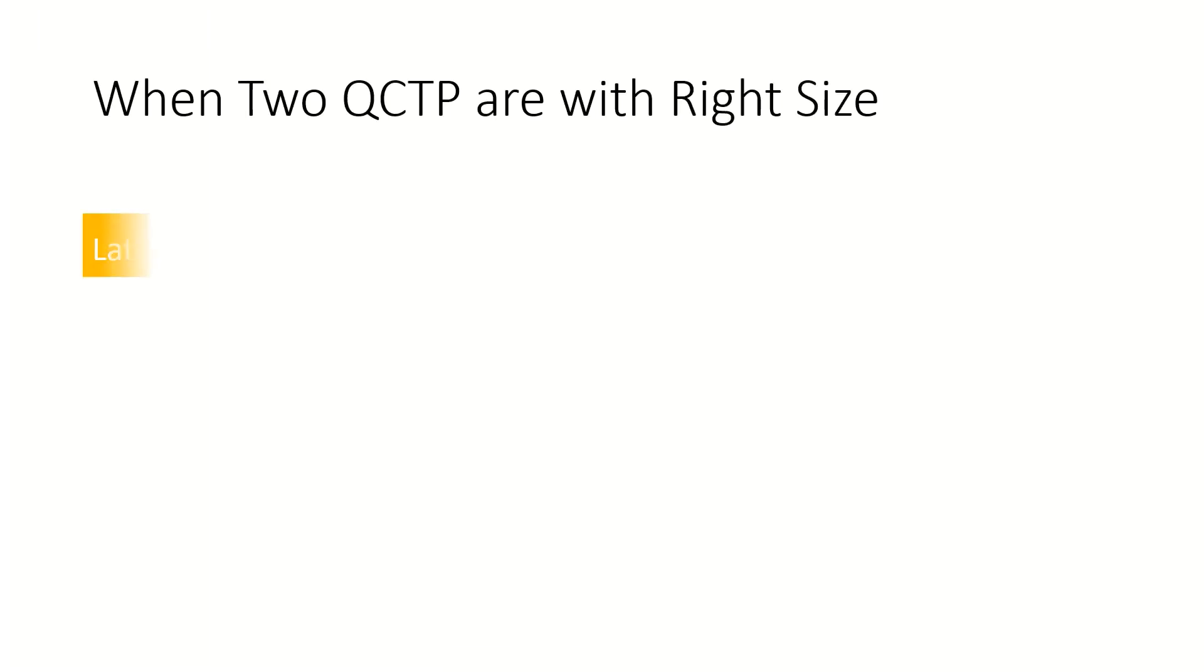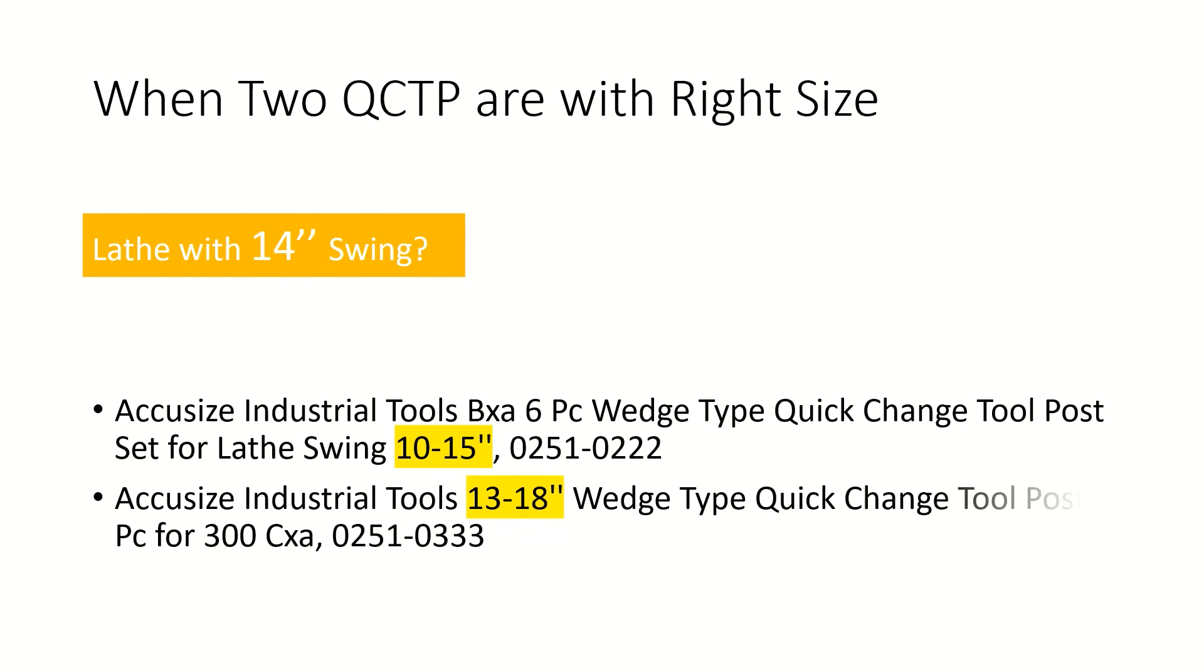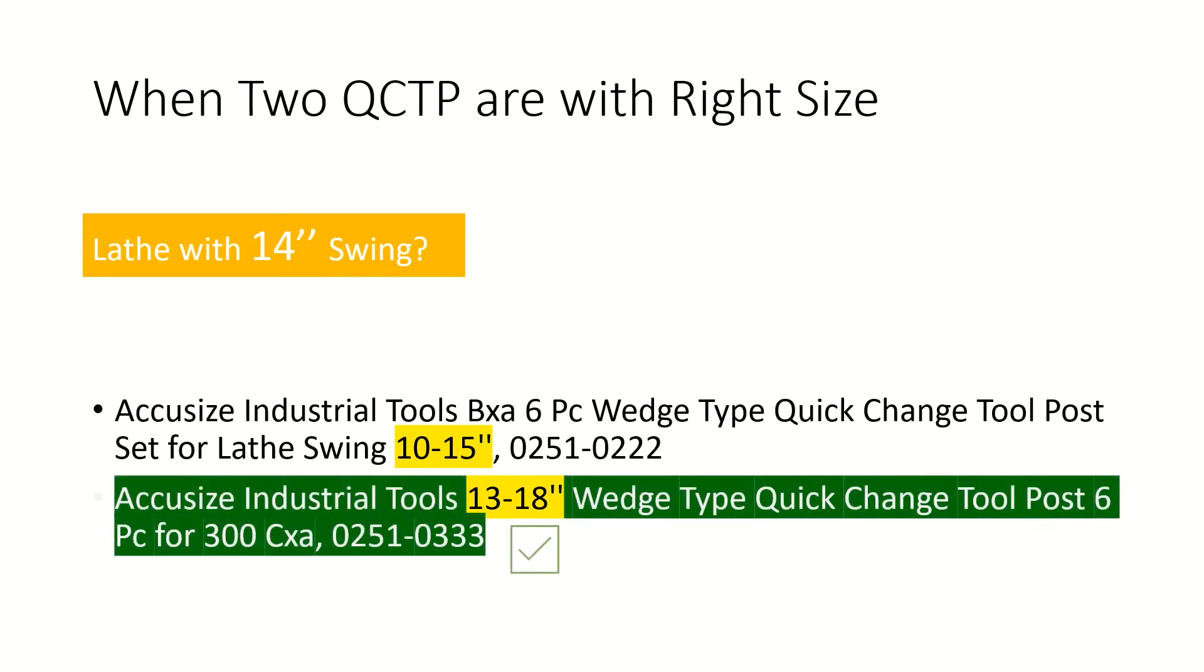Sometimes a lathe can use quick change tool posts of multiple sizes. In this case, we suggest you choose the bigger QCTP. For instance, a lathe with 14-inch swing over bed can use either BXA or CXA quick change tool post. We recommend CXA, the bigger one.